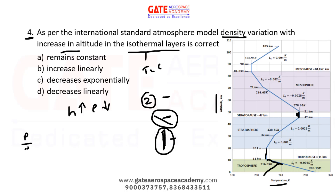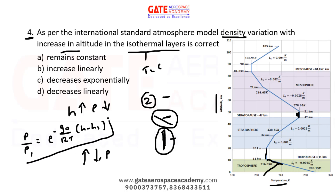For the isothermal region, density is given by: ρ = ρ₁ · exp[−g₀ / (R·T) · (H − H₁)]. When altitude increases, density decreases. By this relation, density decreases exponentially with altitude in the isothermal layers. Therefore the correct option for this question is C. These are the basics of the flight mechanics atmosphere chapter.